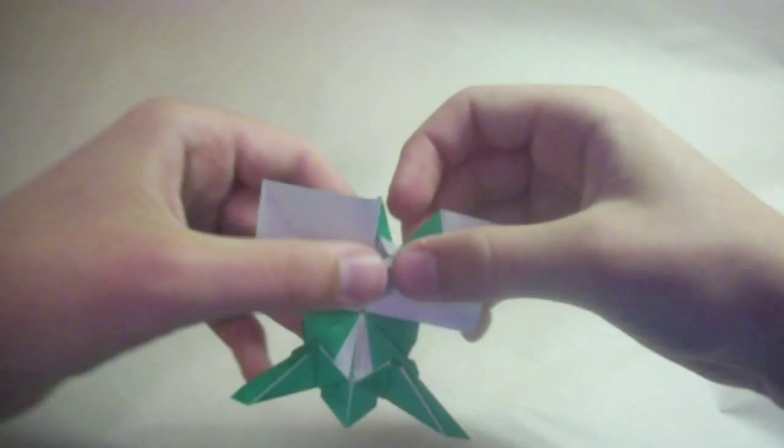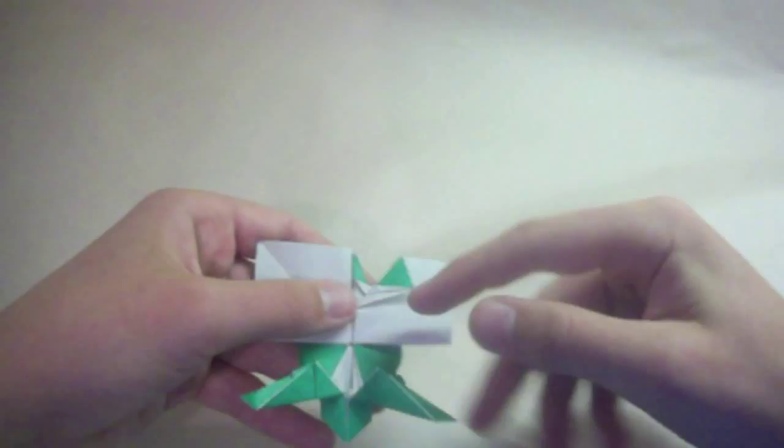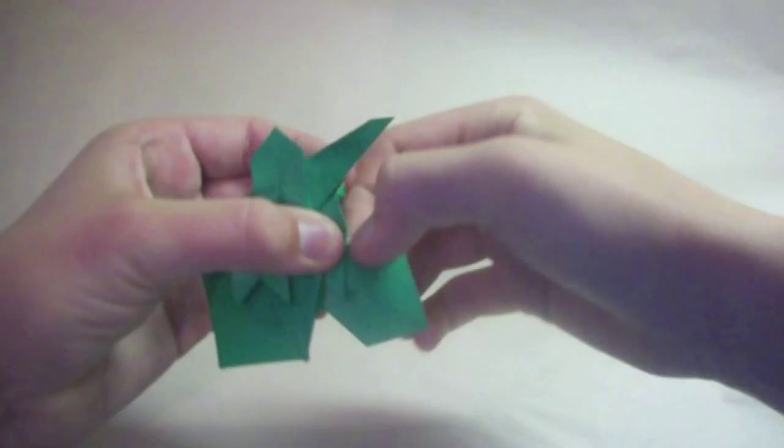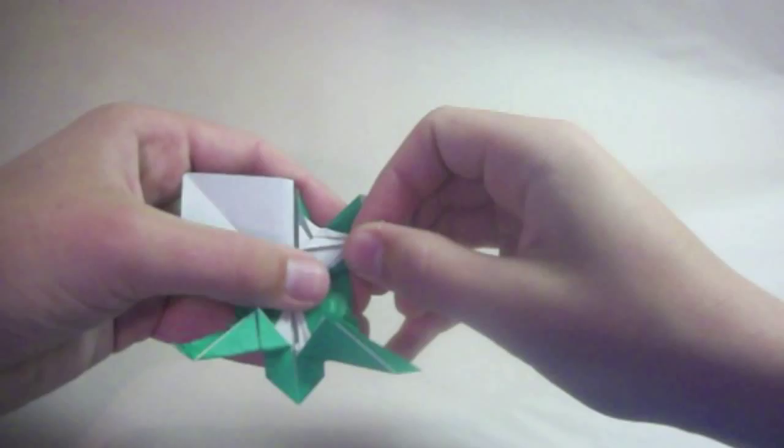And then we're going to fold this flap up. And actually no, sorry. Before we do that, we'll slide this over like we did on the front limbs. And now we'll make a fold that starts in the center here and it goes over the diagonal line here. Just like that.